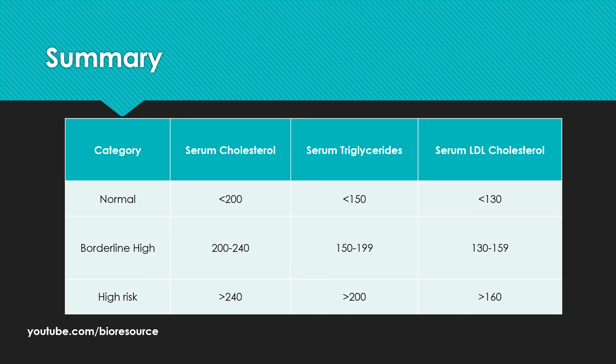In summary, for LDL cholesterol, the optimal range is less than 100 mg per deciliter. Less than 130 mg per deciliter indicates a near-optimal concentration. Anything between 130 to 159 mg per deciliter indicates borderline high, and anything above 160 mg per deciliter indicates high risk for heart disease.